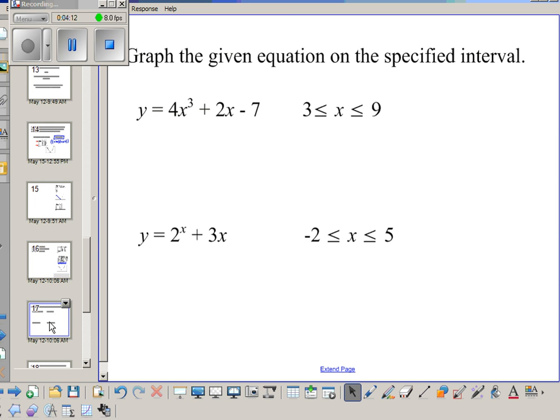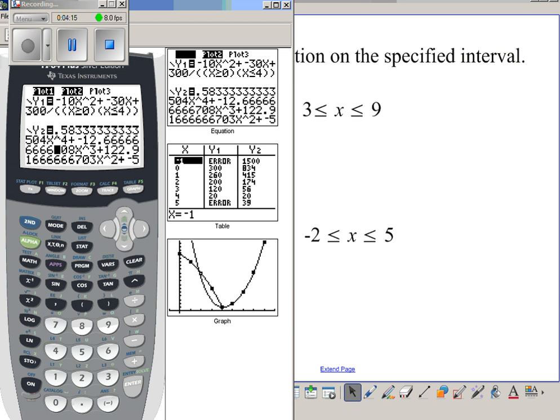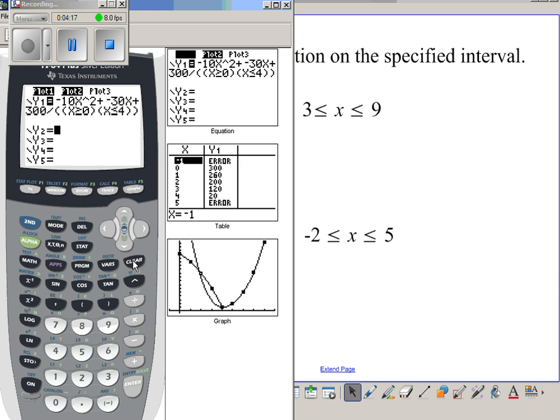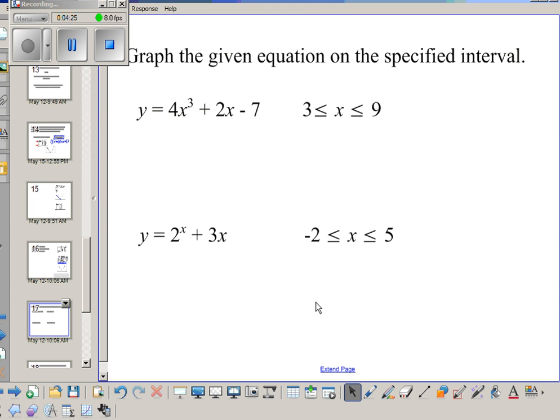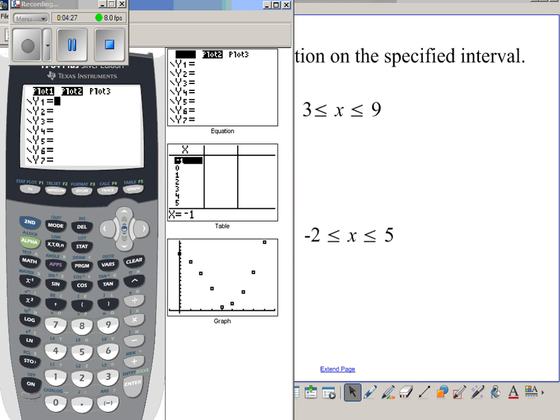Okay, we could practice another one. So I'm going to clear this equation, clear this equation, and then I can type in one of these. Let's type in this first one: 4x³ + 2x - 7. So I can do 4x³ + 2x - 7. If I want to graph that from 3 to 9, I hit my divide, I group my entire bottom, and then I will put x is greater than 3, x is greater than or equal to 3.